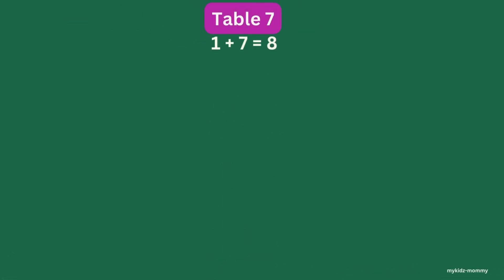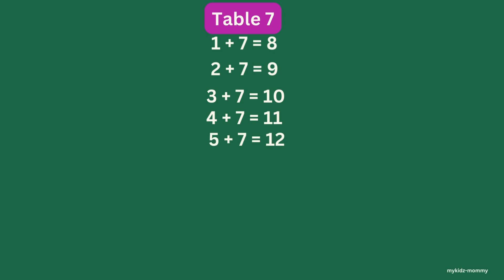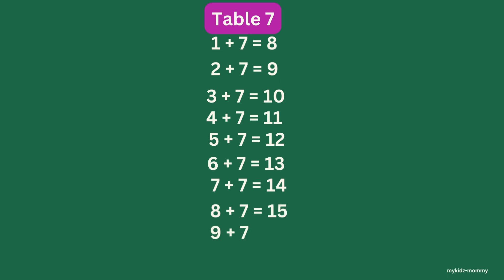Table 7. 1 plus 7 is 8. 2 plus 7 is 9. 3 plus 7 is 10. 4 plus 7 is 11. 5 plus 7 is 12. 6 plus 7 is 13. 7 plus 7 is 14. 8 plus 7 is 15. 9 plus 7 is 16. 10 plus 7 is 17.